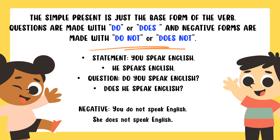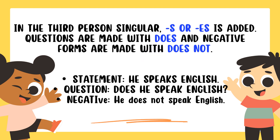Here is an example: In a statement — 'You speak English.' 'He speaks English.' In the question form — 'Do you speak English?' 'Does he speak English?' In the negative form — 'You do not speak English.' 'She does not speak English.' In the third person singular, S or ES is added to the base form of the verb. So 'speak' becomes 'speaks.' Questions are made with 'does' and negatives with 'does not.' He speaks English. Does he speak English? He does not speak English.